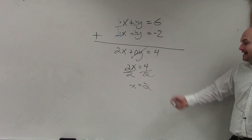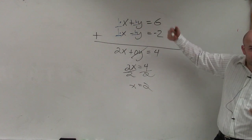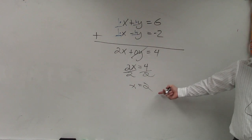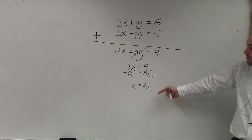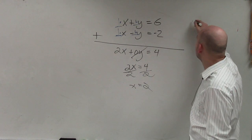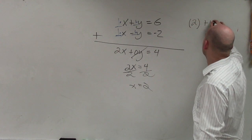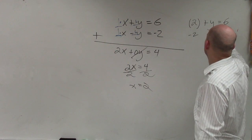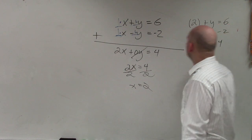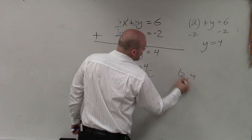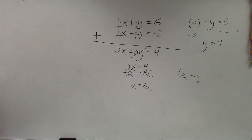To find y, I want to go back to one of my two equations and plug in the value of x, just like when we did substitution. If you remember substitution before the break, this is exactly what we did. So I take 2, plug it back into the top equation, and I get y equals 4. Therefore, my solution where these two points intersect is (2, 4).